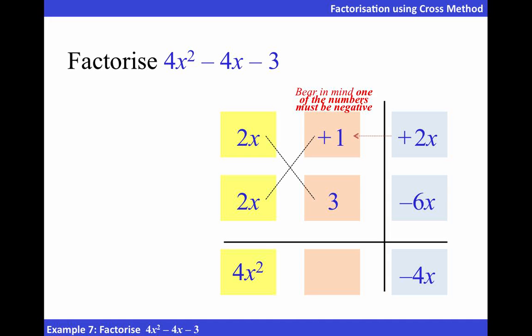To get positive 2x, it's 2x times positive 1. To get negative 6x, it is 2x times negative 3.